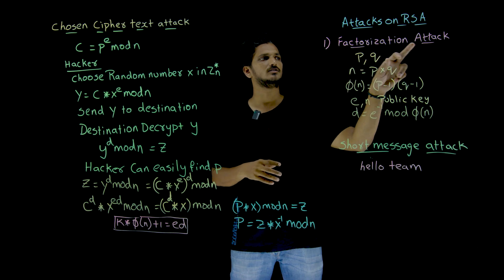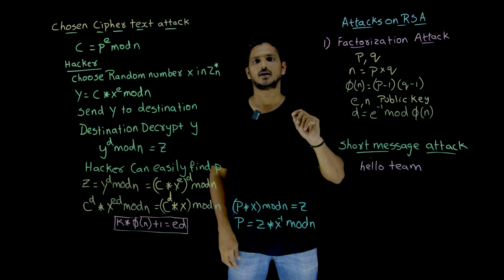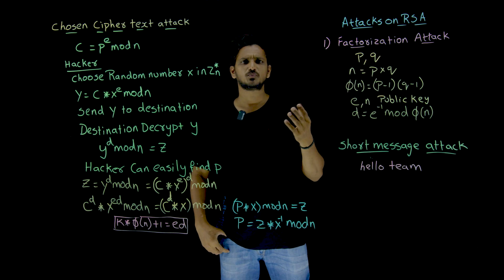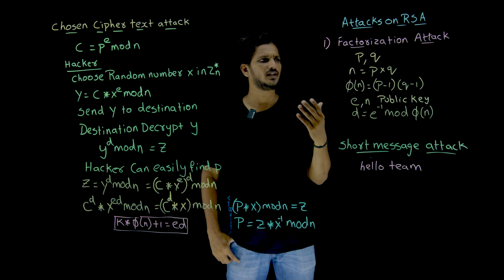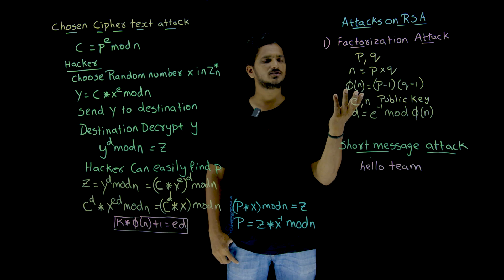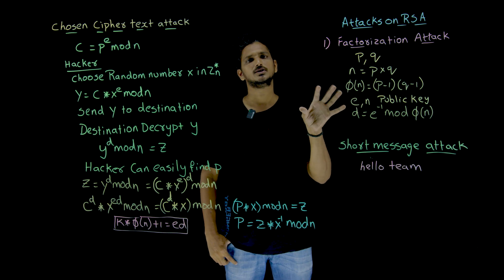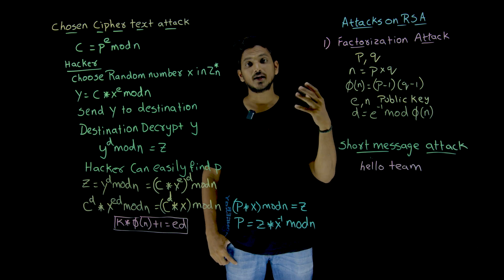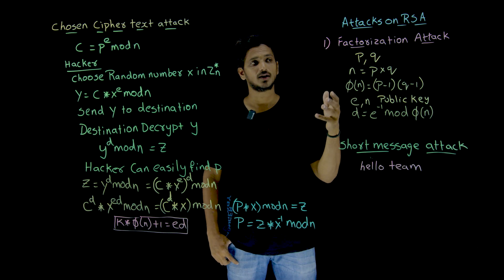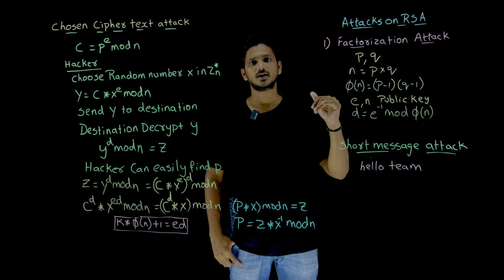The first one is the factorization attack. Is it possible to carry out a factorization attack on RSA? No, it is not possible. Why is it not possible? Let us try to understand.